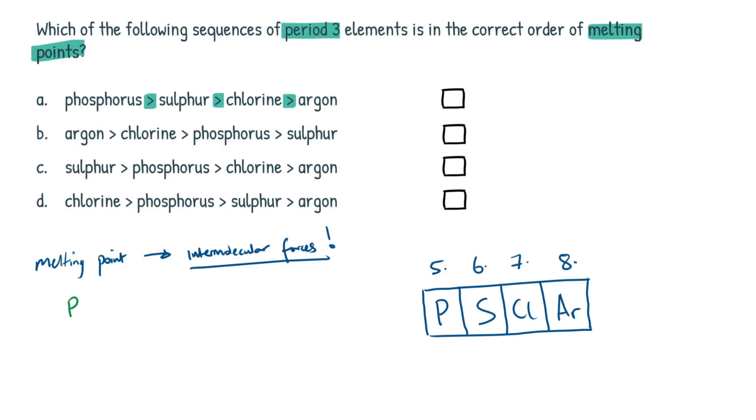So first off, we have phosphorus. Now, this exists as P4. I don't really know what you would refer to this as, whether it would be tetraatomic, potentially. And then S, this exists as S8. And then you would have Cl2, so that's diatomic.